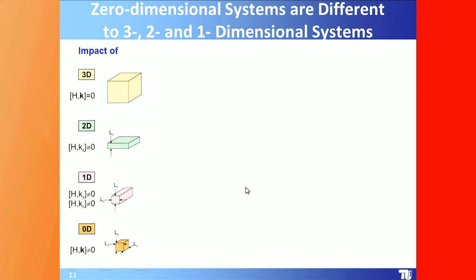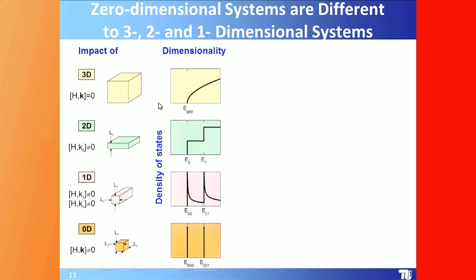Here I visualize the impact of dimensionality, showing the Hamiltonian and the momentum operator for 3D, 2D, 1D, and 0D systems. In one case the operators commute, in the other they do not.